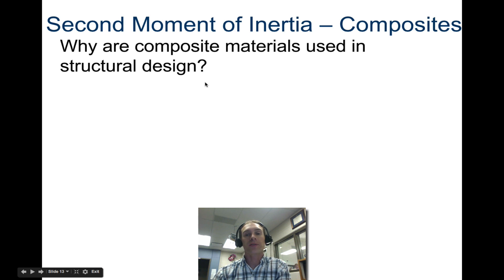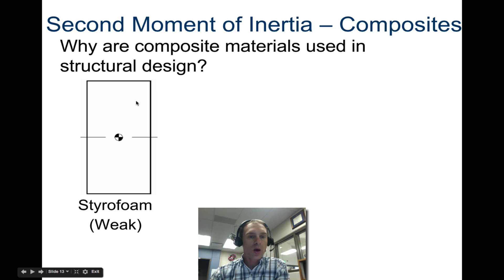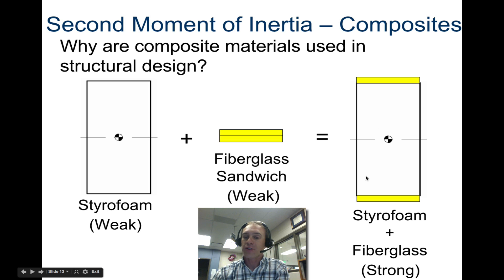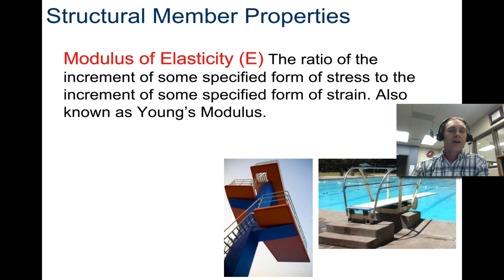Let's take a look at the second moment of inertia for composites. Why are composite materials used? If you have just styrofoam by itself, it's going to be pretty weak. How weak, you ask? We're going to test it out in the stress tester. We're going to take a piece of styrofoam, throw it in our stress tester, and see how strong it is by itself. We're also going to take a fiberglass sandwich, and that's actually quite weak by itself too. But when you put them together, styrofoam and fiberglass, with a resin, which is a hardener, it makes it strong. How strong, do you ask? You're going to find that out when we actually build these things and test them out.